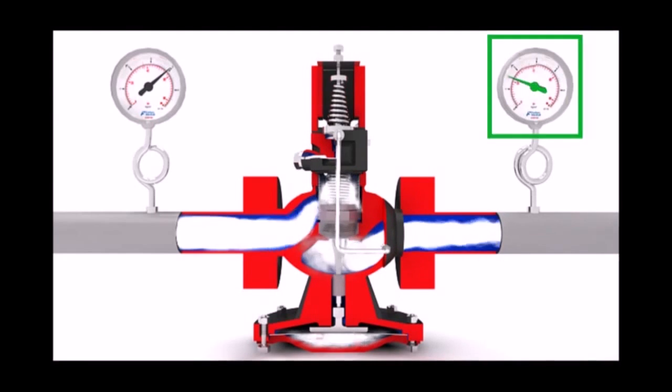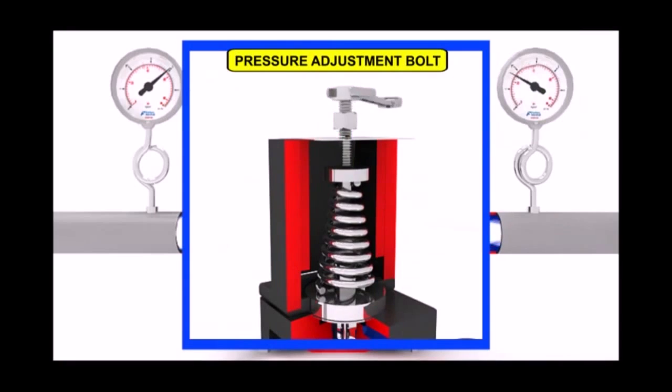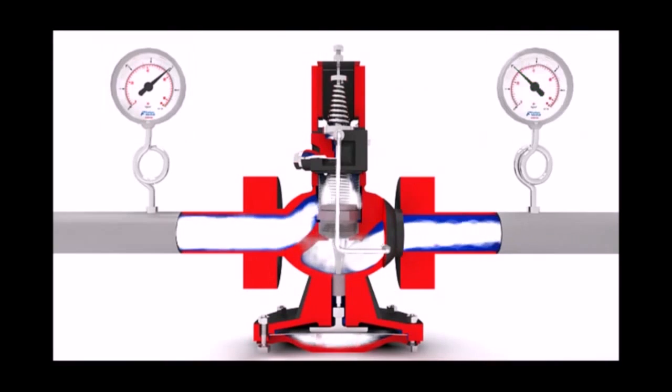To achieve the desired downstream pressure, tighten the pressure adjustment bolt gradually. Once the downstream pressure setting is done,